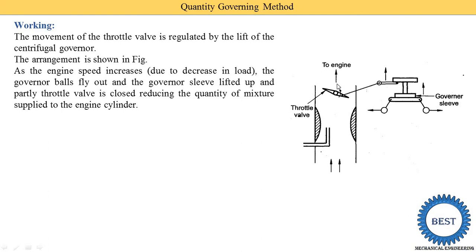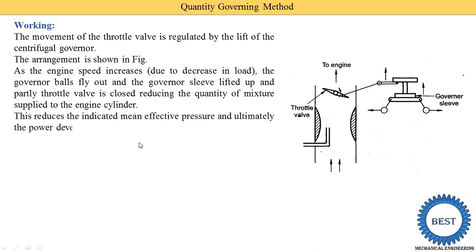The opposite also happens. When the load is increased, the flywheel speed is reduced, so the governor balls move toward the center, the sleeve moves in the downward direction, and it opens the valve so more fuel is supplied to the engine. This reduces the indicated mean effective pressure and ultimately the power developed by the engine is regulated.